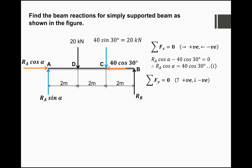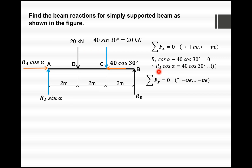Applying the first condition of equilibrium, ΣFx = 0: forces acting to the right are positive and to the left are negative. Ra·cos(α) acts in the positive x-direction, while 40·cos(30°) acts in the negative x-direction. Setting their sum to zero gives us Equation 1: Ra·cos(α) = 40·cos(30°).